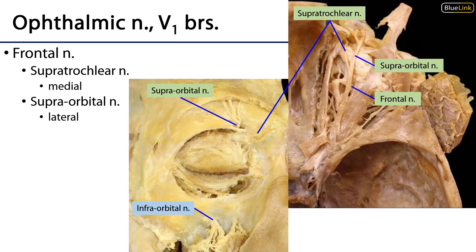Let's take a look at some of these branches, starting with the ophthalmic division V1. For the orbit and the eye, V1 is the star of the show in terms of nerves, but for the face we're limiting ourselves here to the terminal branches of the frontal nerve.